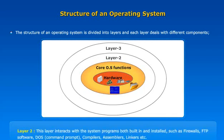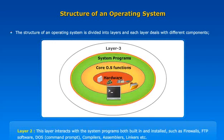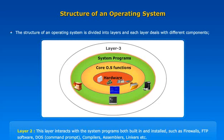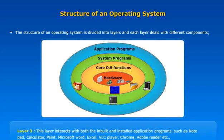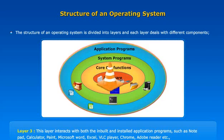The system programs layer includes DOS, command prompt, compilers, assemblers, linkers, etc. The application programs layer consists of user programs such as Microsoft Word, Excel, VLC Player, Chrome, Adobe Reader, etc.